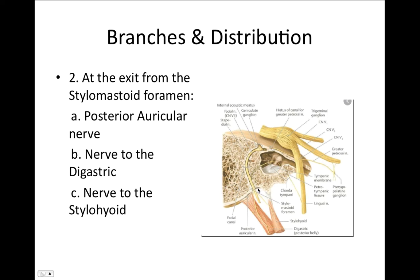At the exit from the stylomastoid foramen, the nerve gives three branches: the posterior auricular nerve (going posterior to the auricle), the nerve to the posterior belly of digastric, and the nerve to the stylohyoid muscle.